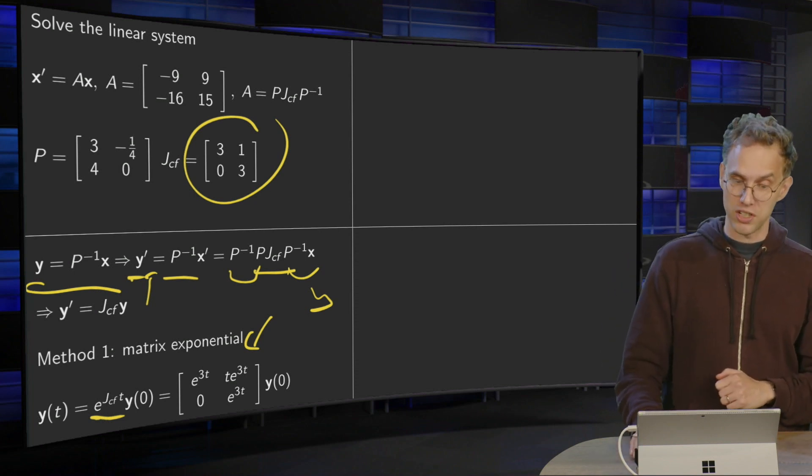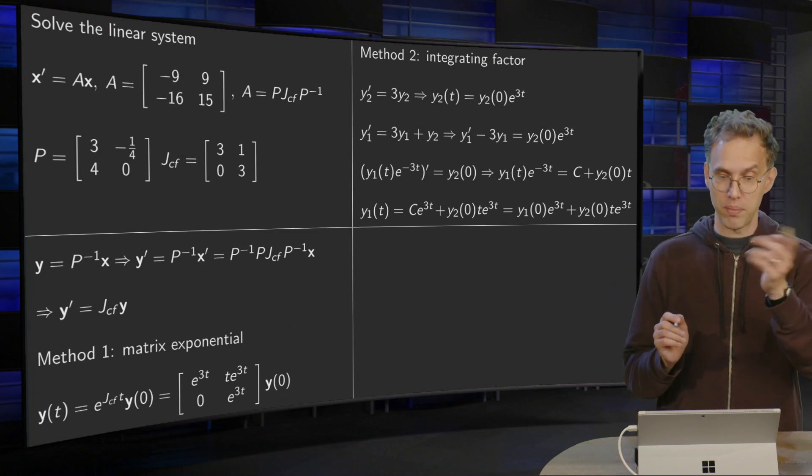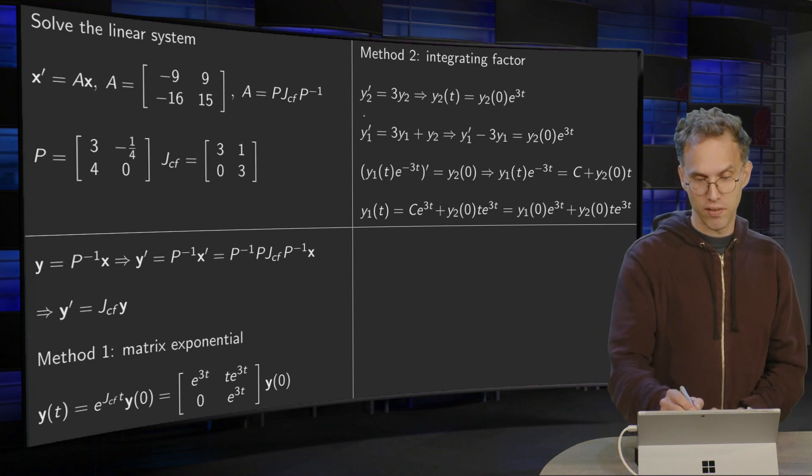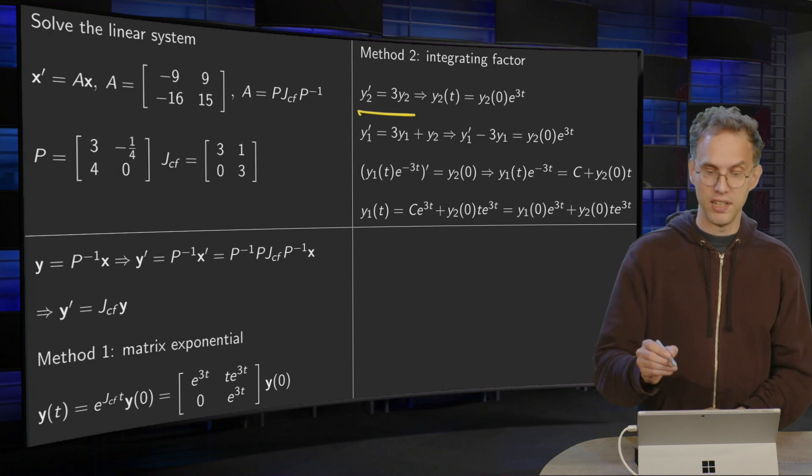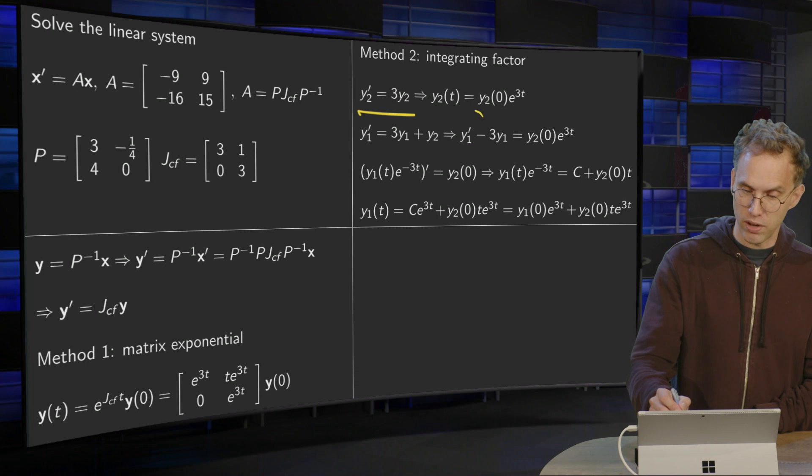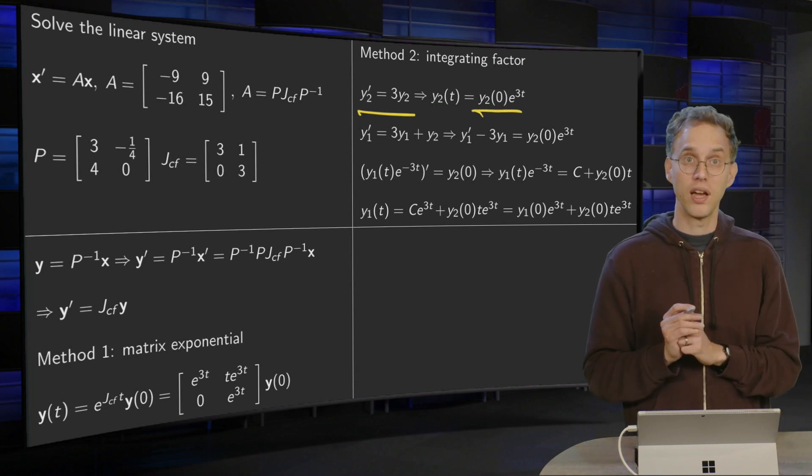We can also do it in a second way. Also nice to see with the integrating factor. So we do y' equals JCF times y. Start with the second equation. We have y2' equals 3 times y2. Immediately you have the answer, of course, because y2 is now scalar. So y2 equals e to the power of 3t times the initial condition.